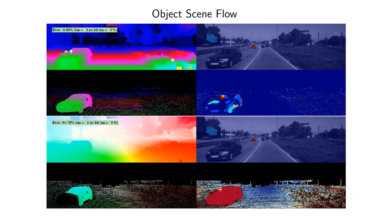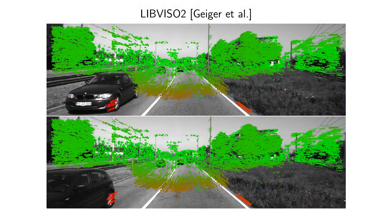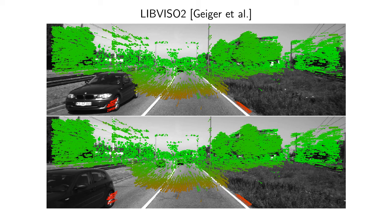In this case, the motion of the foreground object is too large to be reliably estimated. This is also illustrated by looking at sparse feature correspondences, calculated on the four images.